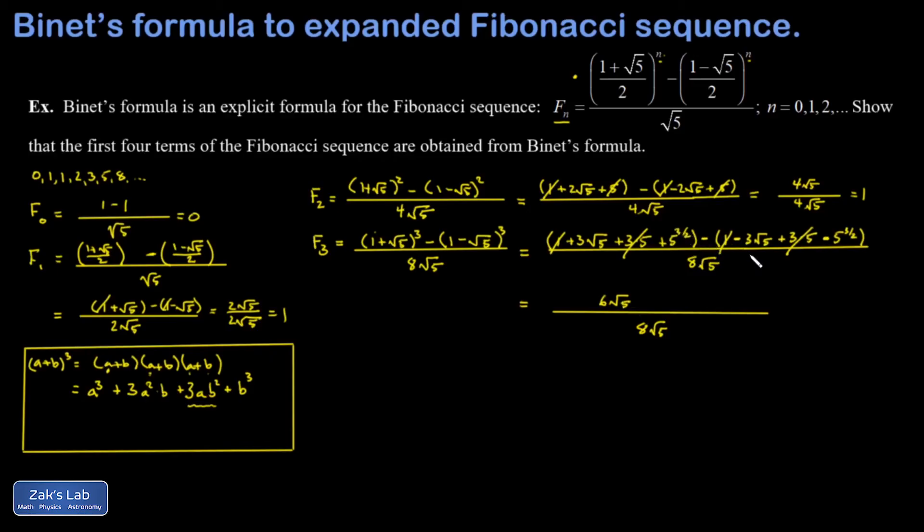And then I get five to the three halves minus negative five to the three halves. So I end up with plus two times five to the three halves.